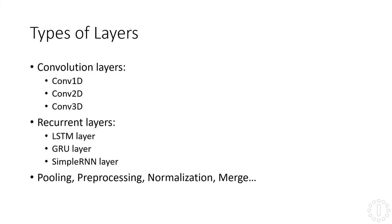Keras allows us to use many different types of layers — here on this slide we have an example of only some of them. Some convolution layers we can use are 1D, 2D, and 3D convolution layers. For recurrent layers we can use an LSTM layer, a simple RNN layer, a GRU layer, and others. In addition to convolution and recurrent layers, we can use pooling layers, preprocessing layers, and layers for normalization or merging.